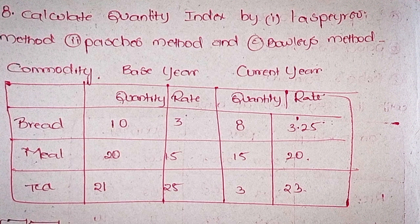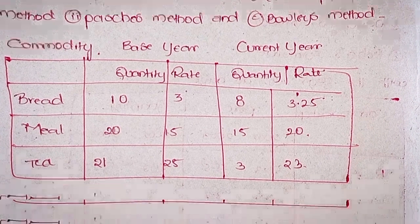Commodity data: Bread, Meat — base year quantity and rate, current year quantity and rate. Values: 10, 3, 8, 3.5, 20, 15, 15, 20, 21, 25, 3, 23.